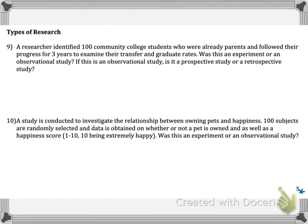A researcher identified 100 community college students who were already parents and followed their progress for 3 years to examine their transfer and graduation rates. Was this an experiment or an observational study? If it is an observational study, is it prospective or retrospective? So only that first sentence is about what this person did. What did the researcher do? Identified 100 community college students who were already parents and followed their progress for 3 years to examine transfer and graduation rates.